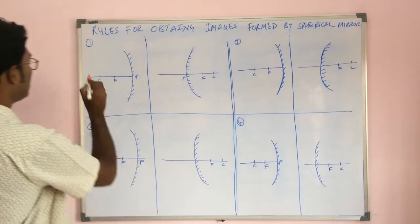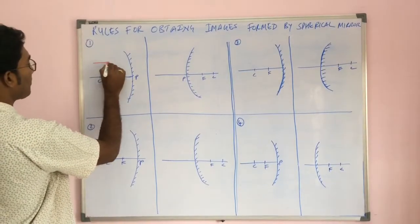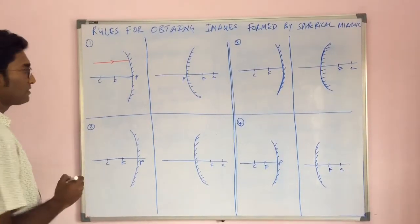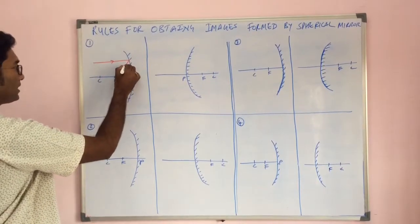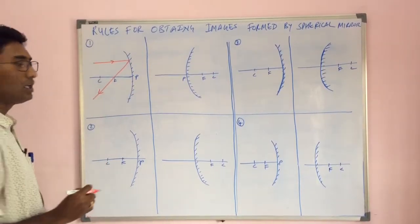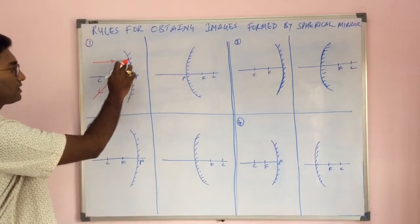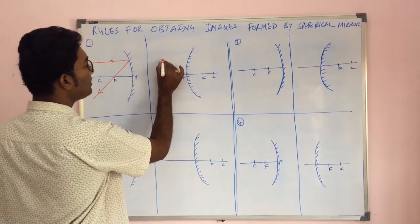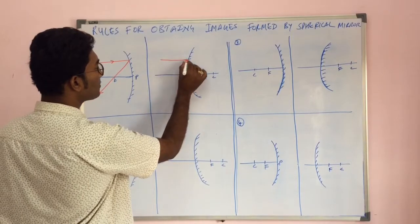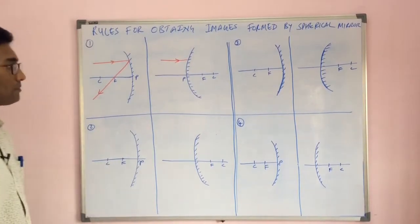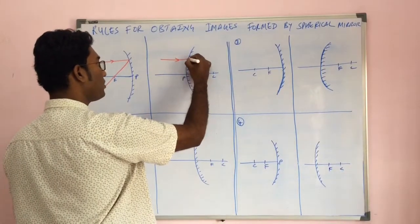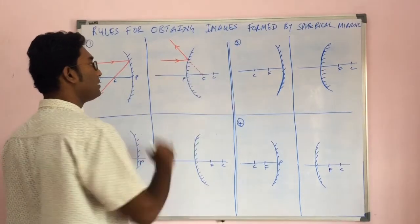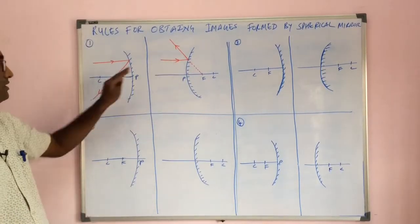The first rule says that if a light ray is traveling parallel to the principal axis towards a concave mirror, after reflection it passes through the focus. For a convex mirror, a light ray traveling parallel to the principal axis after reflection diverges, and this reflected light appears to be coming out from the focus.